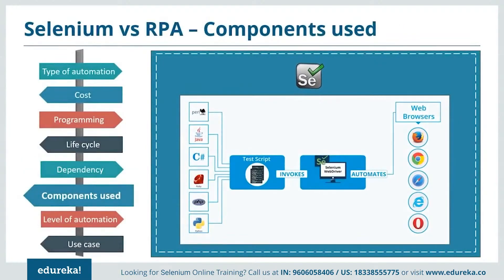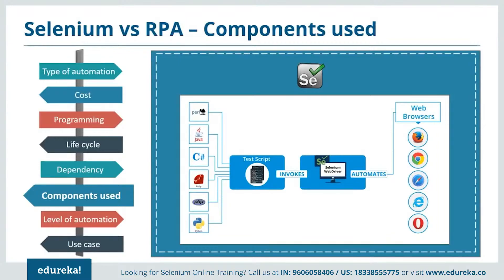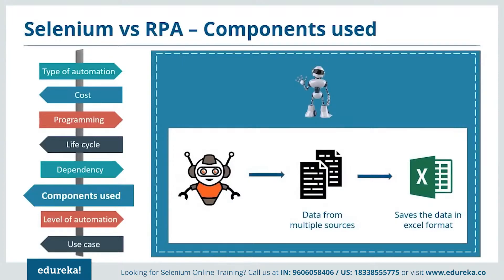Regarding the major component used: Selenium uses web drivers to automate any task. Test scripts written in any programming language can be invoked by the system and automated using Selenium WebDriver, which can run on different browsers like Chrome, Safari, Mozilla, and so on. Whereas RPA makes use of robots to complete a task. RPA bots help in automating data from different sources and saving it in the form of an Excel file where data can be found in sequence.